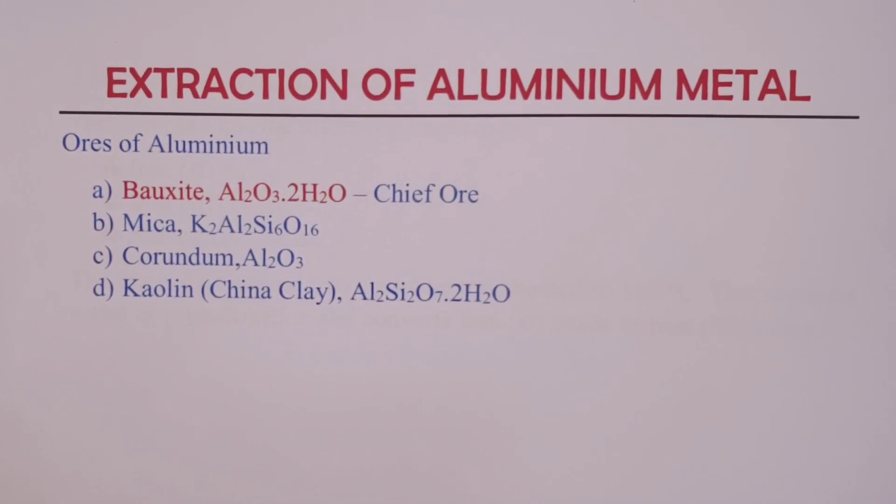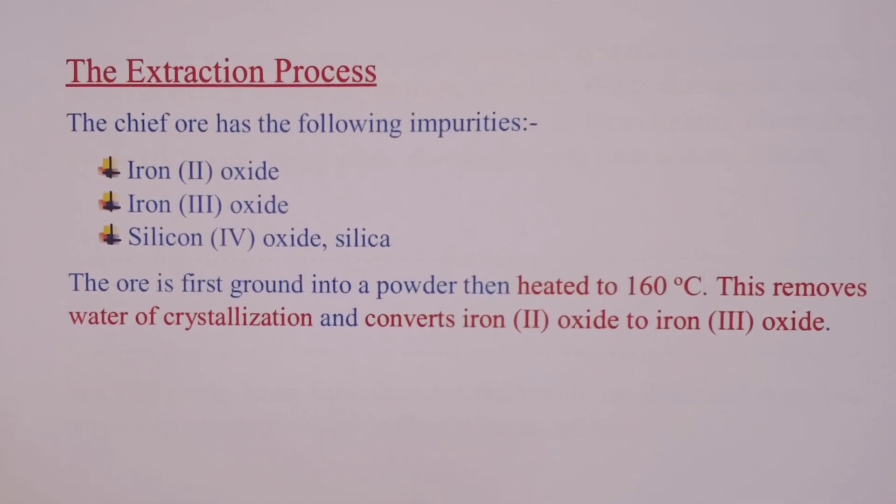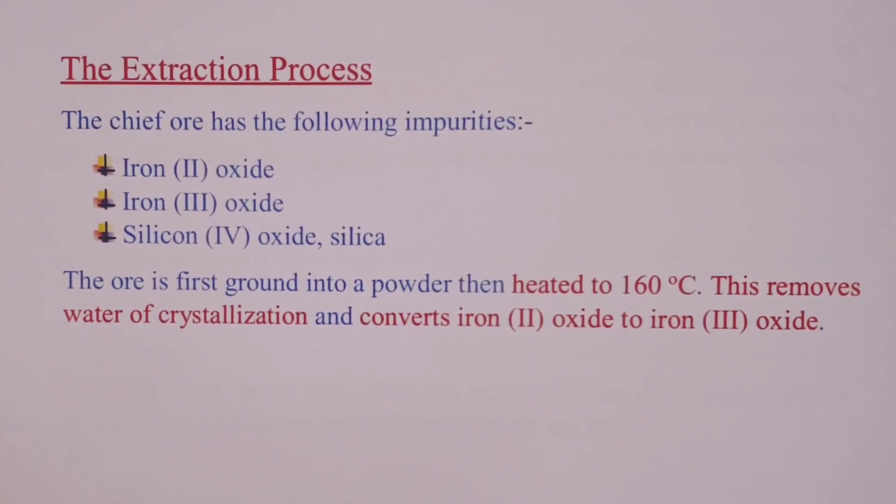Hello learners, we welcome you to extraction of aluminum metal. We begin with the ores of aluminum, chief ore being bauxite, that is hydrated aluminum oxide. Other ores include mica, corundum, and china clay. We now proceed to the extraction process.